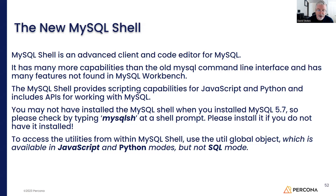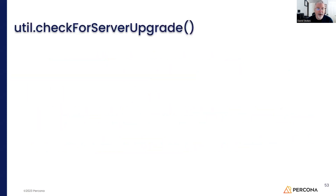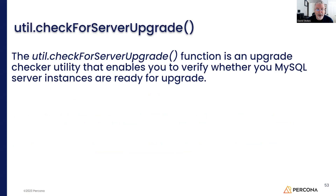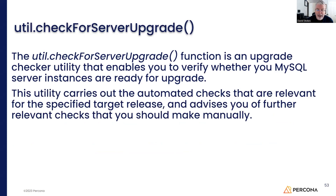To access utilities, you have to be in either the JavaScript or Python mode, not the SQL mode. You're going to type in util.checkForServerUpgrade and it's going to go out there and check your server. It's not going to do the upgrade for you — it's just going to tell you what it found that needs to be corrected before you restart with 8.0's binaries to do the upgrade.